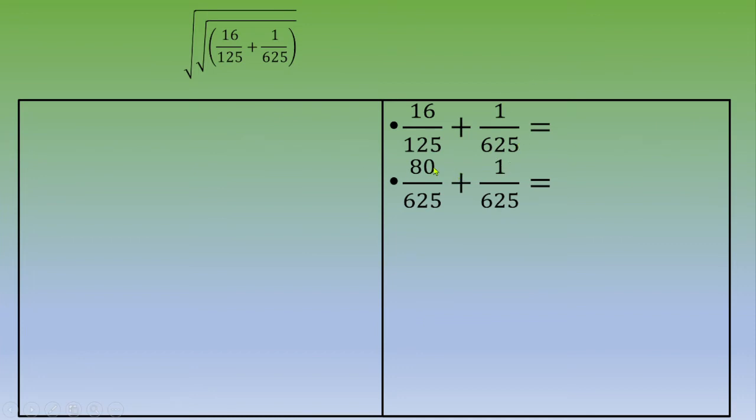You obtain 80 over 625 plus 1 over 625, so you obtain 81 over 625, which is 9 squared over 25 squared, which is 3 over 5 squared and squared.